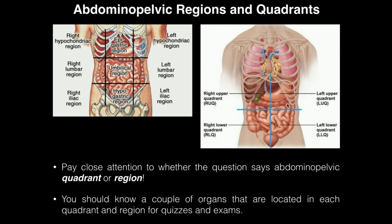The quadrants are really the easiest to remember because there's a right and a left, and an upper and a lower, and you just combine them to make the combinations. For example, the left upper quadrant — remember, right and left have to do with the patient's perspective. So from their perspective, that is their left side, and it's the upper one, making it the left upper quadrant.